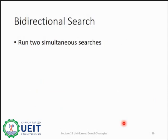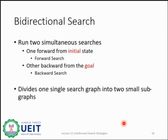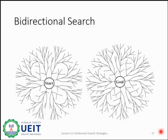Bidirectional search algorithm is the last search algorithm in the uninformed series. It runs two simultaneous searches: one from the initial state called forward search, and one from the goal node called backward search. Bidirectional search replaces one single search graph with two small subgraphs — one starts the search from the initial vertex and another starts from the goal vertex. The search stops when the two graphs intersect each other. Bidirectional search can use search techniques such as breadth first search, depth first search, depth limited search, etc.